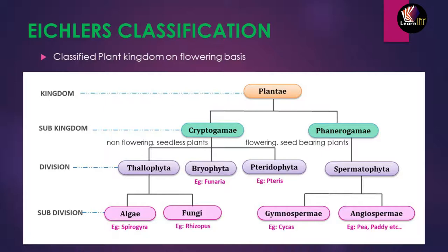Thallophyta is further divided into three categories. The first is Algae, the second is Fungi, and the third is Lichens — which is an association between algae and fungi. On screen only two are shown, but Lichens is the third subdivision of Thallophyta, forming an intermediate relationship between algae and fungi.